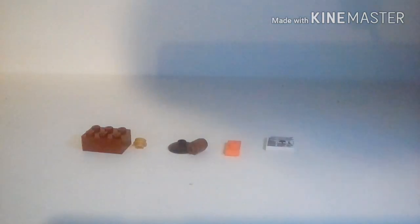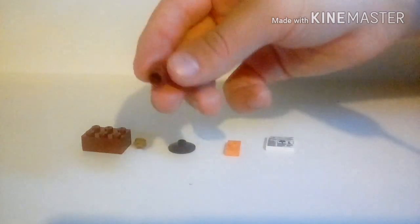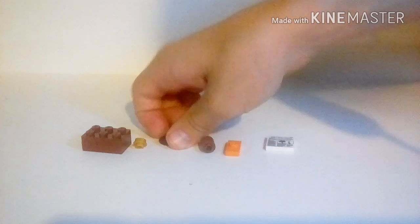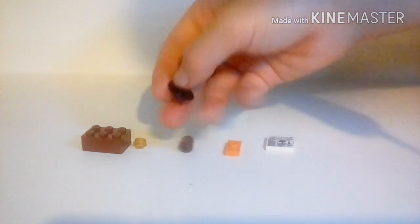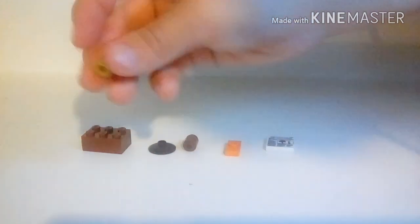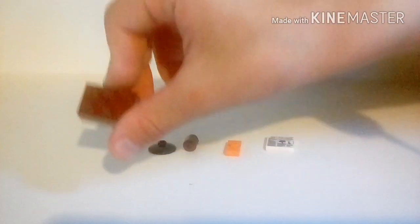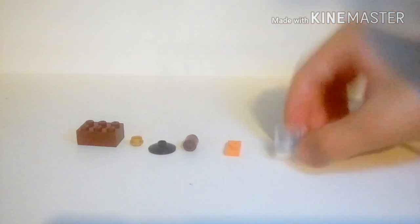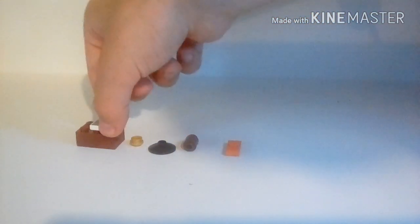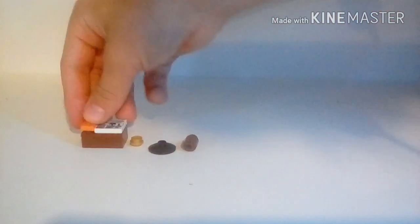You can have that in any color. You also need a rounded piece in brown, a black rounded piece as well, a golden stud, and a brown two by three brick. So now I'm going to build it.